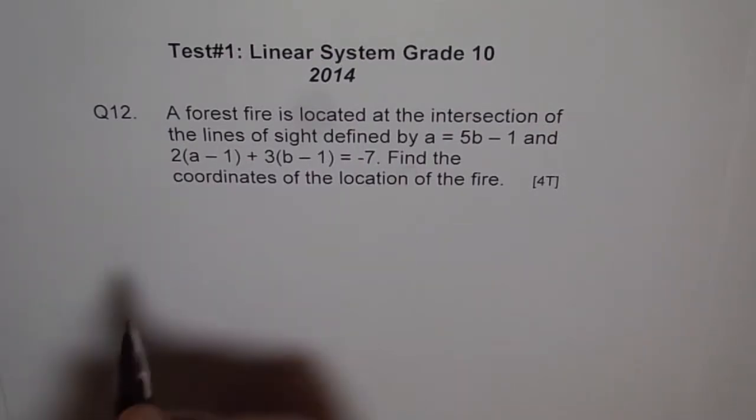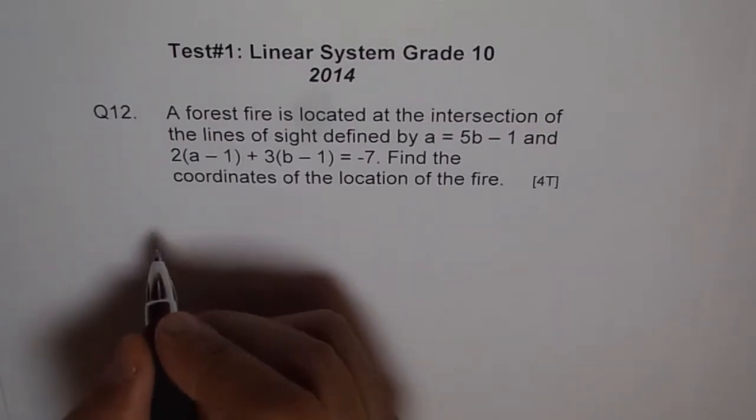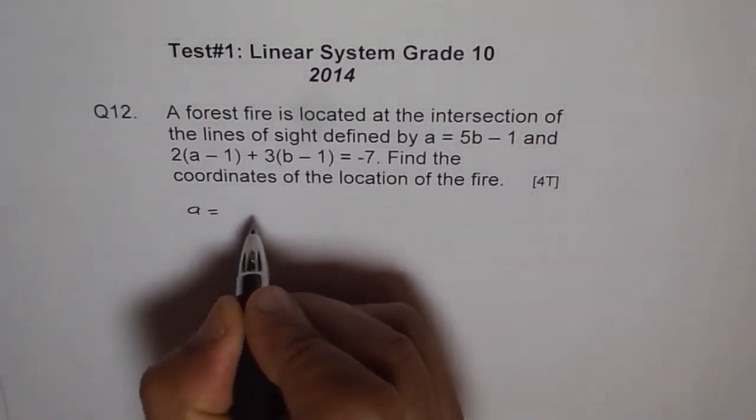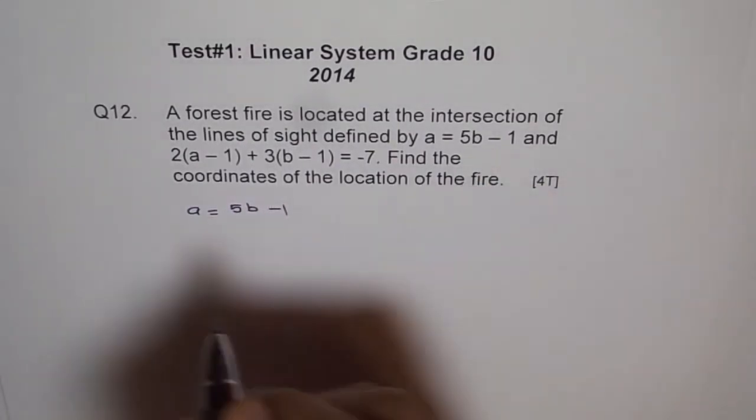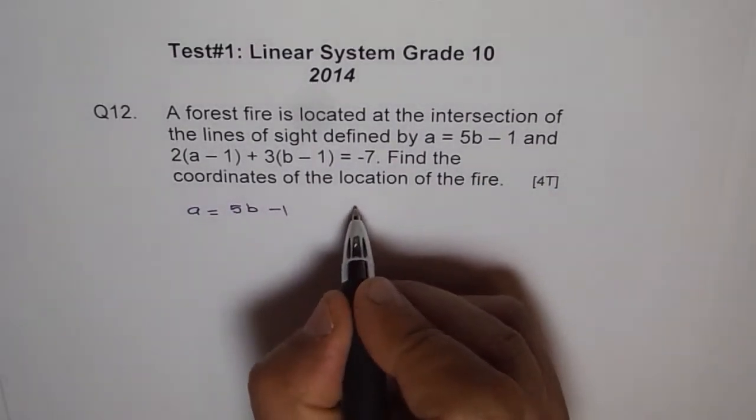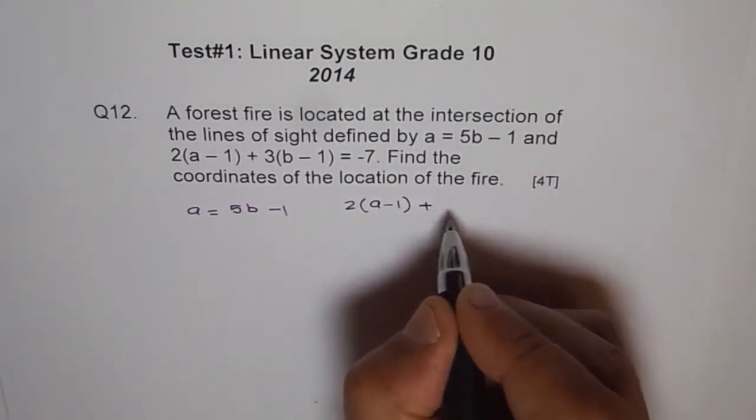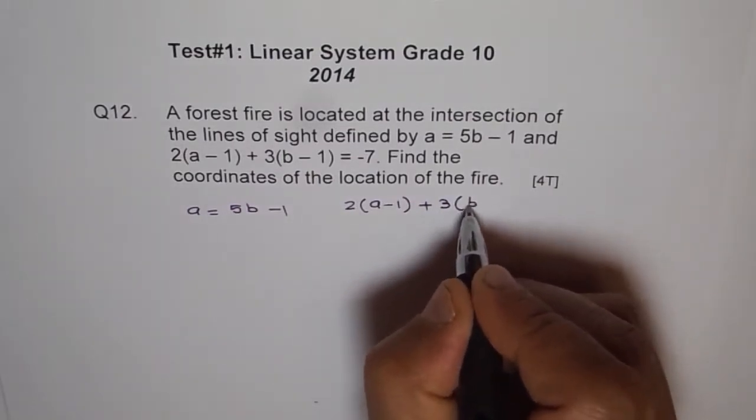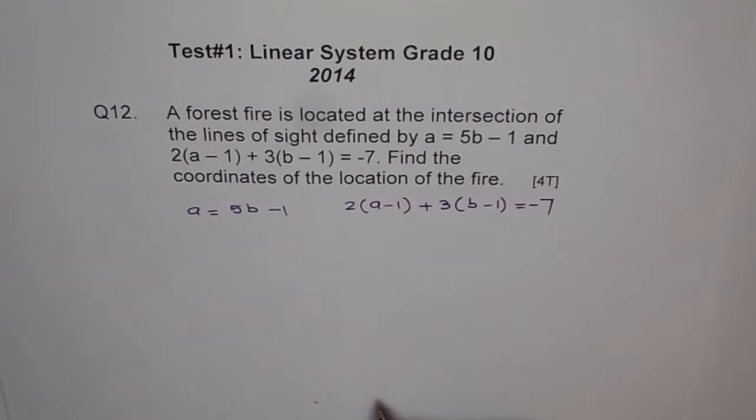So basically it is a linear system formed by two linear equations which are A equals 5B minus 1, the first one, and the second one is 2 times A minus 1 plus 3 times B minus 1 equals minus 7.